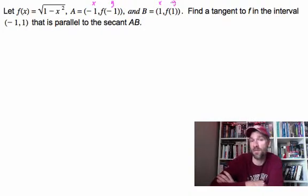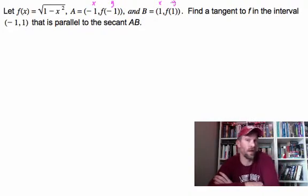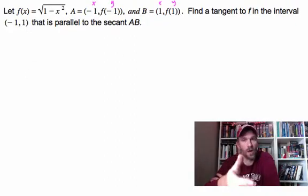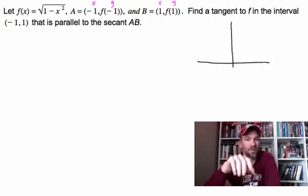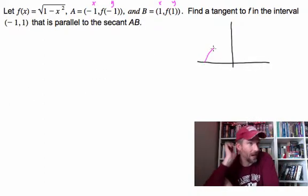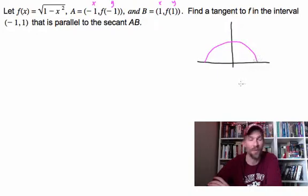A is at negative 1, f of negative 1. B is at 1, f of 1. Remember, those are specific points. f of 1 is the y value. Find the tangent to f in the interval from negative 1 to 1 that is parallel to the secant AB. What's going on?